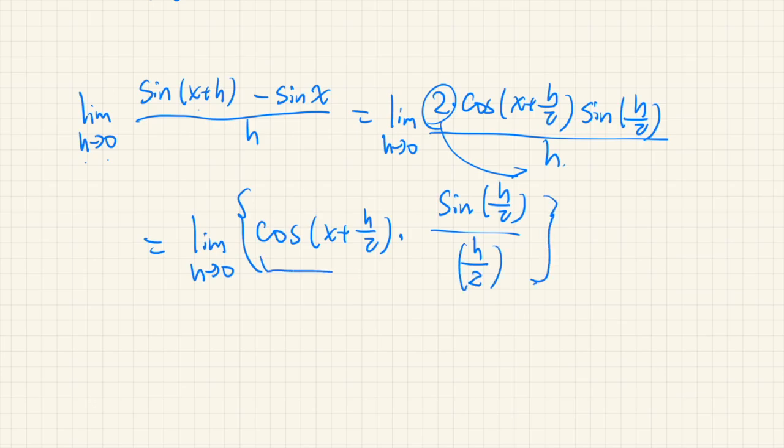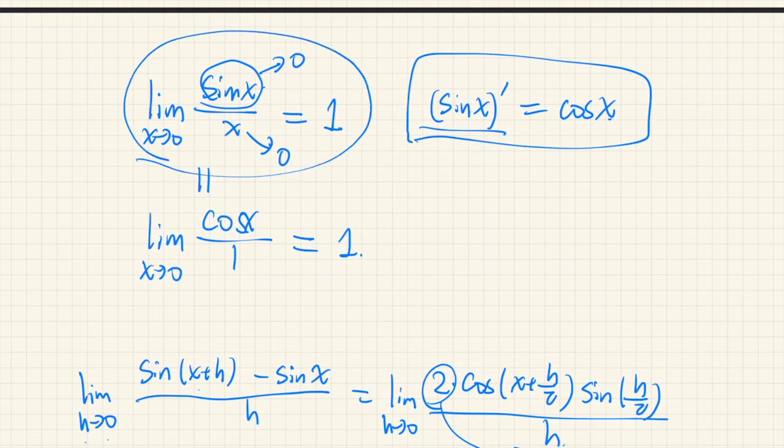This part converges to cos x, and this part converges to 1. But here, we are actually using this identity. We are actually using this limit.